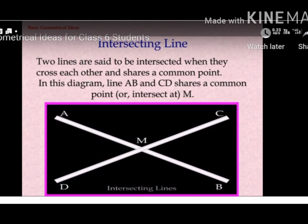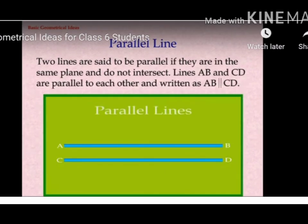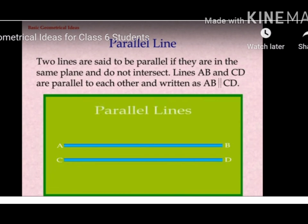Now, the next one is Parallel Lines. Parallel Lines never intersect each other. See these two lines AB and CD. Two lines are said to be parallel if they are in the same plane and do not intersect. Lines AB and CD are parallel to each other and written as AB parallel to CD. These two lines can be extended and they will never meet each other.